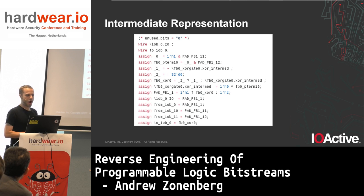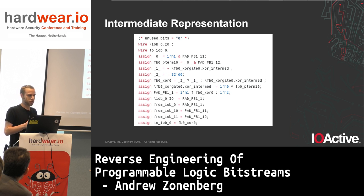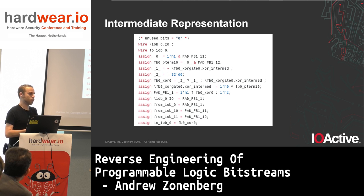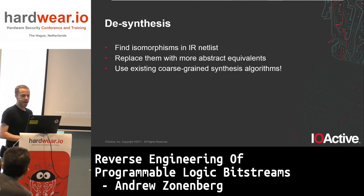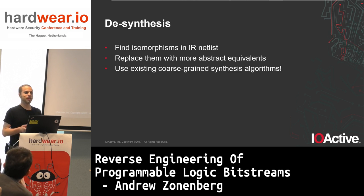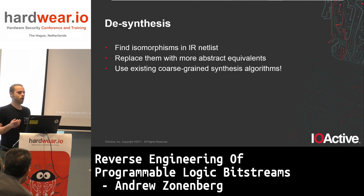The IR for a CoolRunner looks very similar — slightly differently structured because we have an and-or array with XOR gates coming off of it. But once you run logic minimization, they end up looking the same. And so now we can get to the fun part: desynthesis. We want to find structures in this intermediate netlist, replace them with more abstract equivalents, and in many cases we can reuse work from coarse-grained synthesis flows to find these structures.